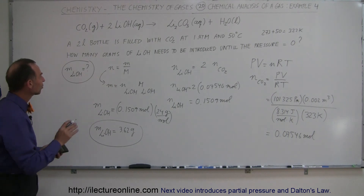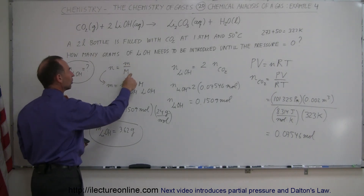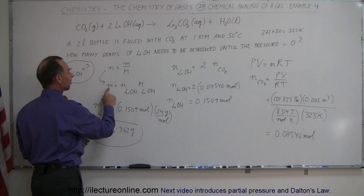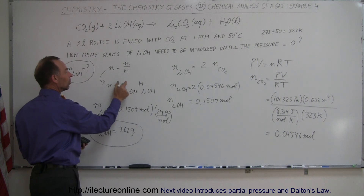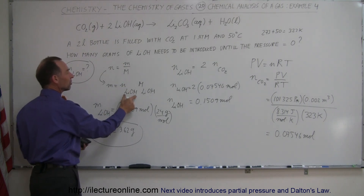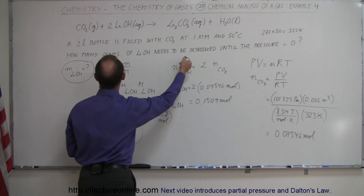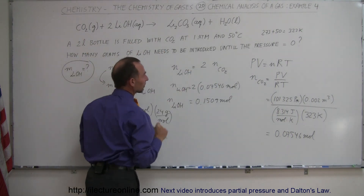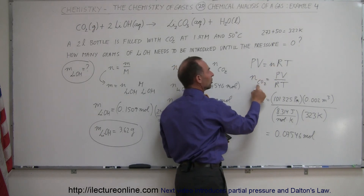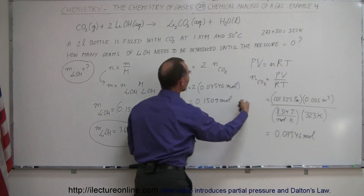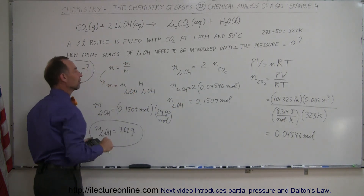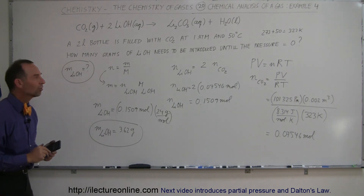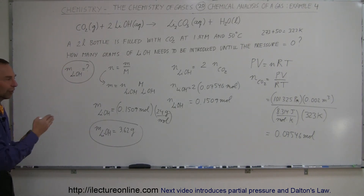The strategy is always the same: start with the definition of moles as mass per molar mass, then solve for mass as moles times molar mass. Relate the moles of lithium hydroxide to moles of carbon dioxide using the 2 to 1 stoichiometric ratio. Use the ideal gas equation to find moles of carbon dioxide, convert to moles of lithium hydroxide, then find the mass. This pattern is straightforward if you follow it consistently.